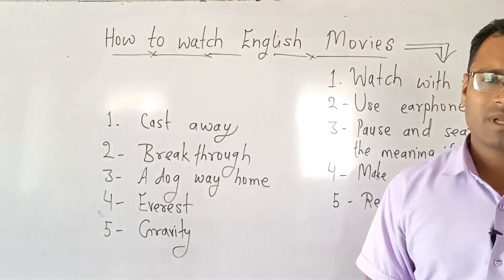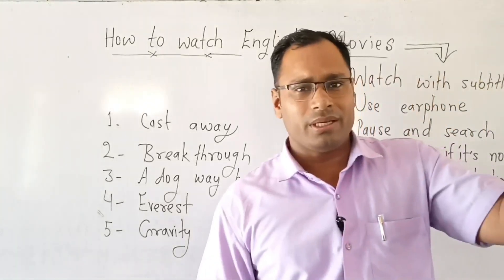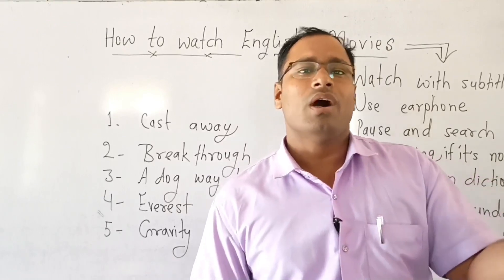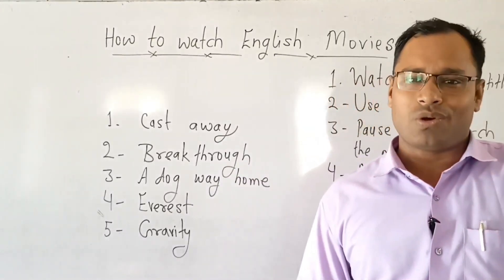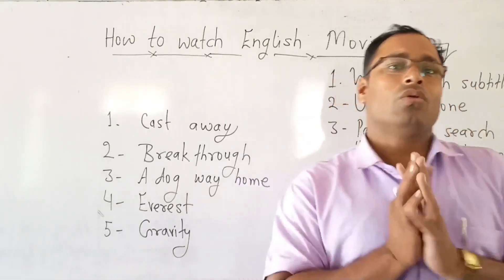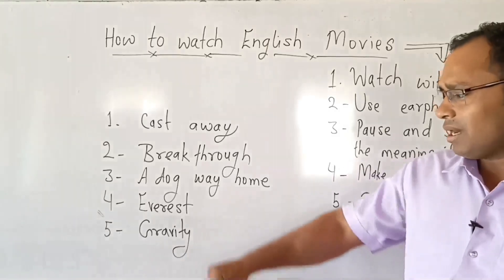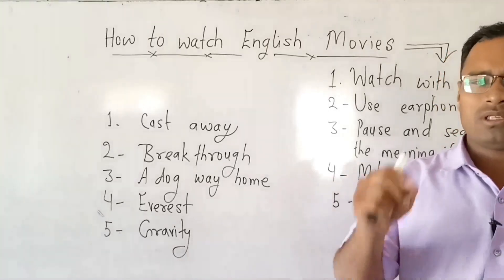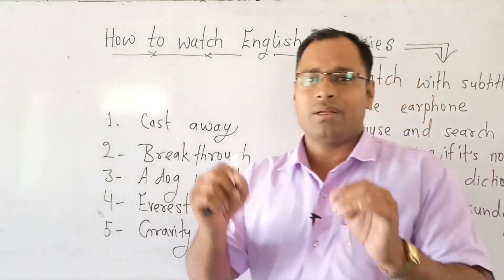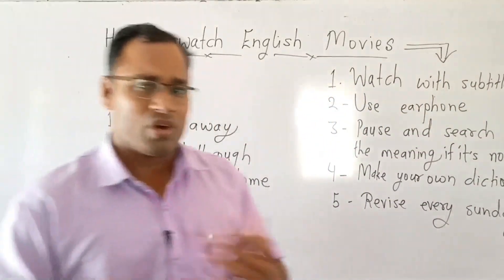Number five: Gravity — कुछ लोग space में जाते हैं, अंतरिक्ष में out of gravitation, और वहाँ से उनमें से कुछ लोग लौट कर आते हैं, कुछ नहीं आ पाते। बहुत बड़ी struggle की कहानी है। ये कहानी आपकी English को बहुत शानदार तरीके से upgrade करेगी।